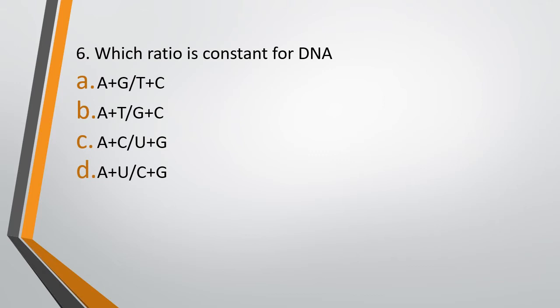Question number 6. Which ratio is constant for DNA? Option A, A+G to T+C; Option B, A+T to G+C; Option C, A+C to U+G; Option D, A+U to C+G. The correct answer is Option A — adenine plus guanine to thymine plus cytosine is the ratio which remains constant for DNA.